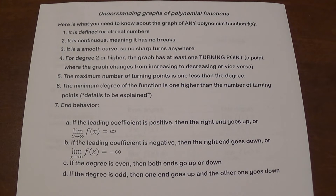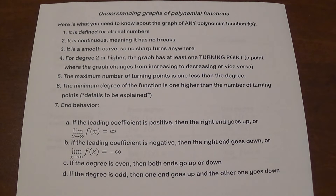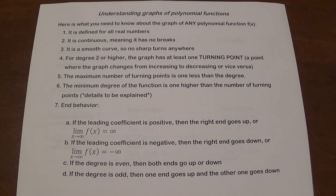With polynomial functions, there is very specific end behavior. No matter how many turning points the graph is going to have, eventually on the right-hand side it's going to go up or down, and the left side eventually is going to go up or down. If the leading coefficient is positive — that's the number in front of the variable with the highest degree — then the right end always goes up.